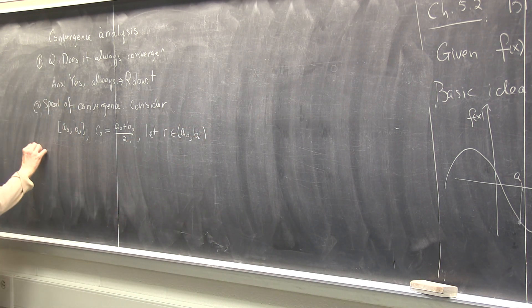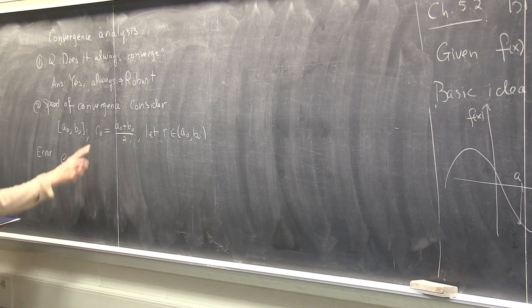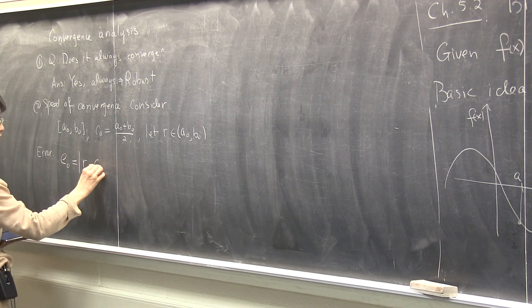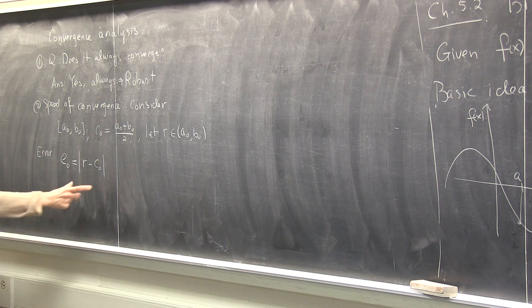I want to analyze it. Say, e zero, what is the error? Well, you are guessing that c zero is your guess, so the error will be the distance between r and c zero. Is that right? c zero, you know, but where is the r? You don't know, right? That's the location of the root. So how can we estimate this error here?